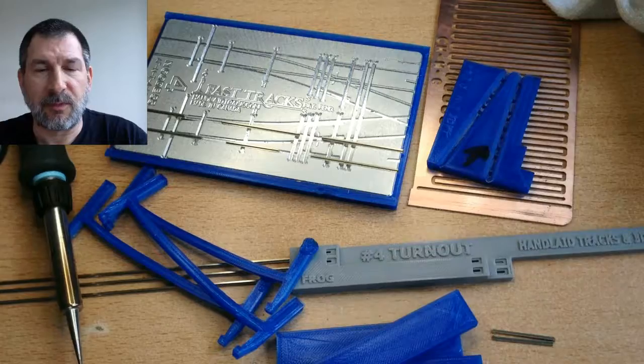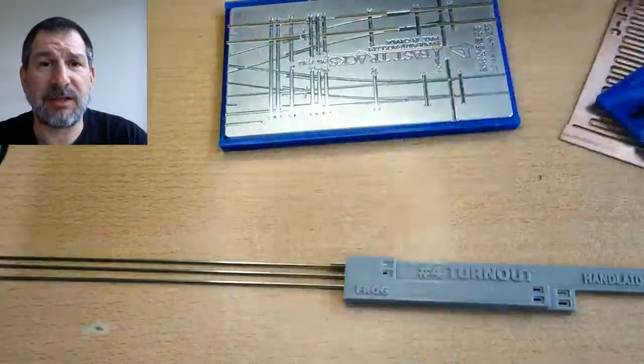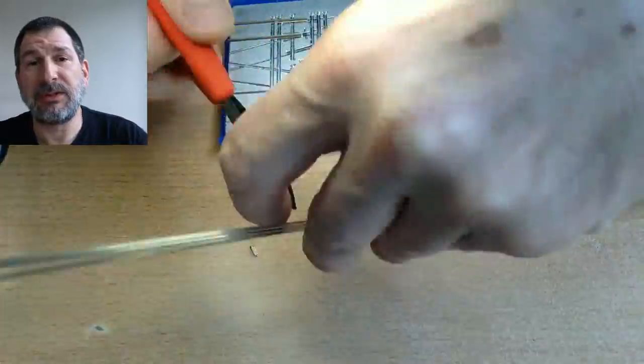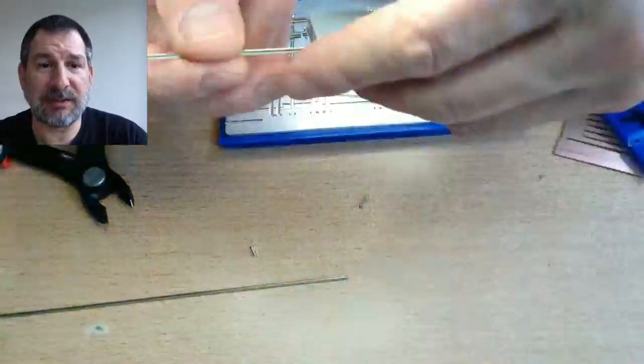Today I'm just building a number four turnout using the FastTracks jigs, but unlike the original ones which I did using Blu-Tack, I made my own jigs for it. What I did different with this is I'm using the FastTracks jig for the entire turnout, but I built my own support that goes around the jig that holds my own clamping system.